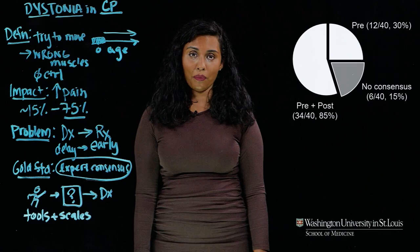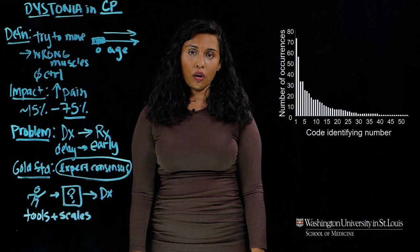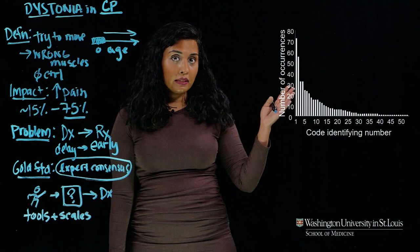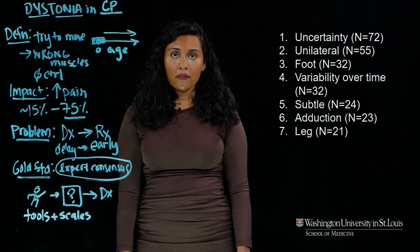We next used qualitative thematic analysis to analyze the consensus-building discussion. We broke that discussion down into codes — each recurring idea was given a code title — and looked at the frequency distribution of those codes throughout the discussion. We saw a natural inflection point after the first seven codes, and these seven codes seemed to aggregate into two themes.